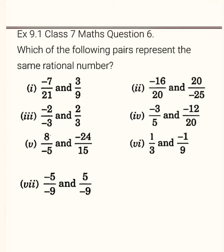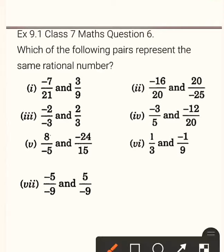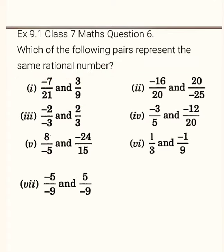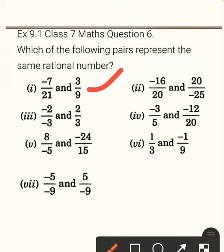We will see question number 6 of exercise 9.1. Question number 6 is: which of the following pairs represent the same rational number? In all parts of the question, two rational numbers are given to us. We have to find out which of these pairs are the same — meaning both should be equal or equivalent rational numbers.